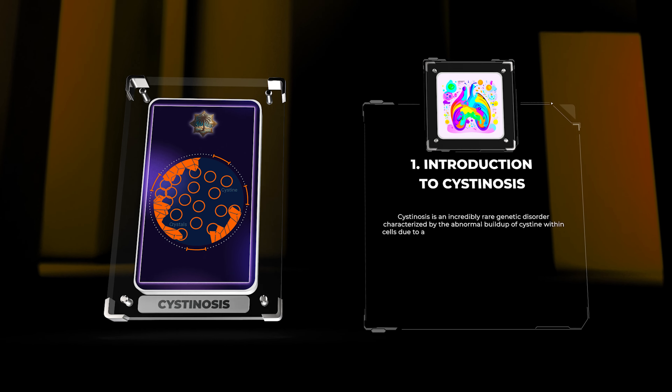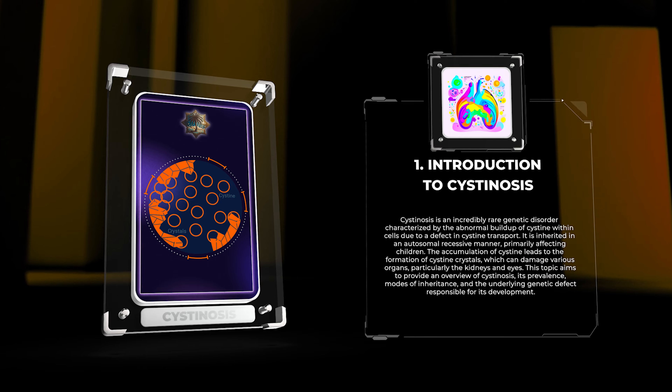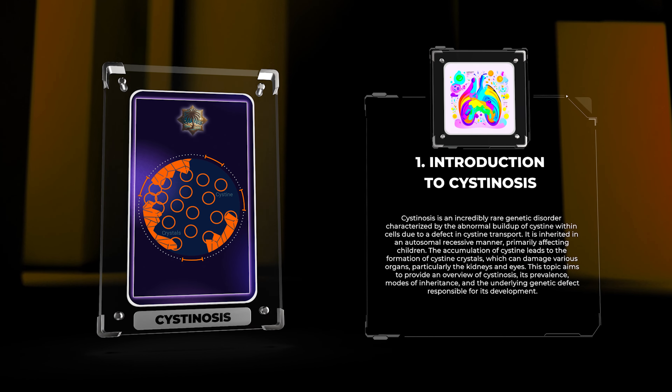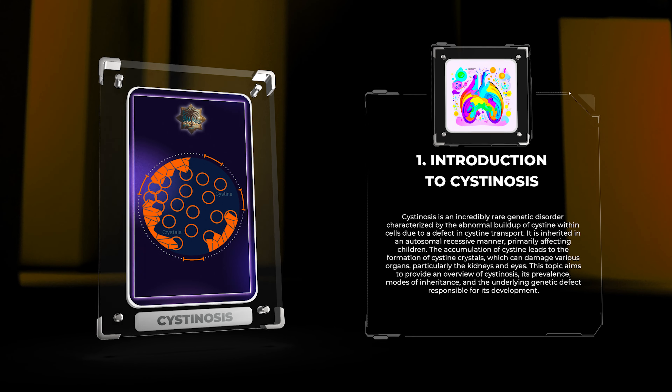Cystenosis is an incredibly rare genetic disorder characterized by the abnormal buildup of cysteine within cells due to a defect in cysteine transport. It is inherited in an autosomal recessive manner, primarily affecting children. The accumulation of cysteine leads to the formation of cysteine crystals, which can damage various organs, particularly the kidneys and eyes. This topic aims to provide an overview of Cystenosis, its prevalence, modes of inheritance, and the underlying genetic defect responsible for its development.